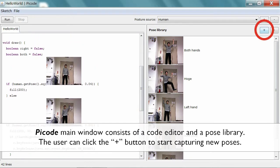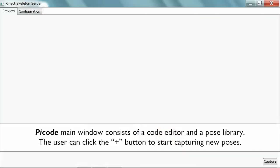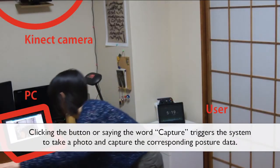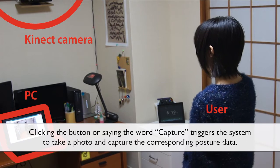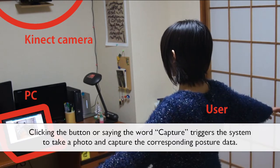The user can click the plus button to start capturing new poses. Clicking the button or simply saying the word capture triggers the system to take a photo and capture the corresponding posture data.